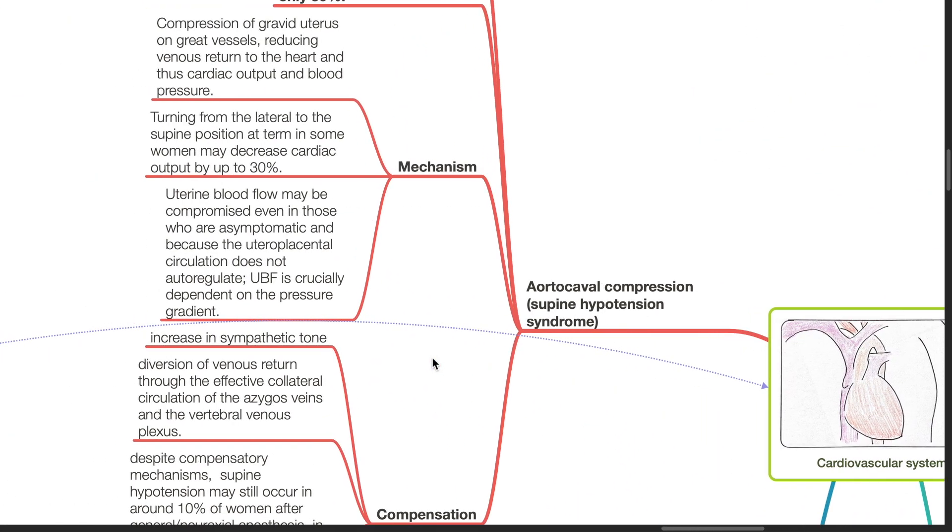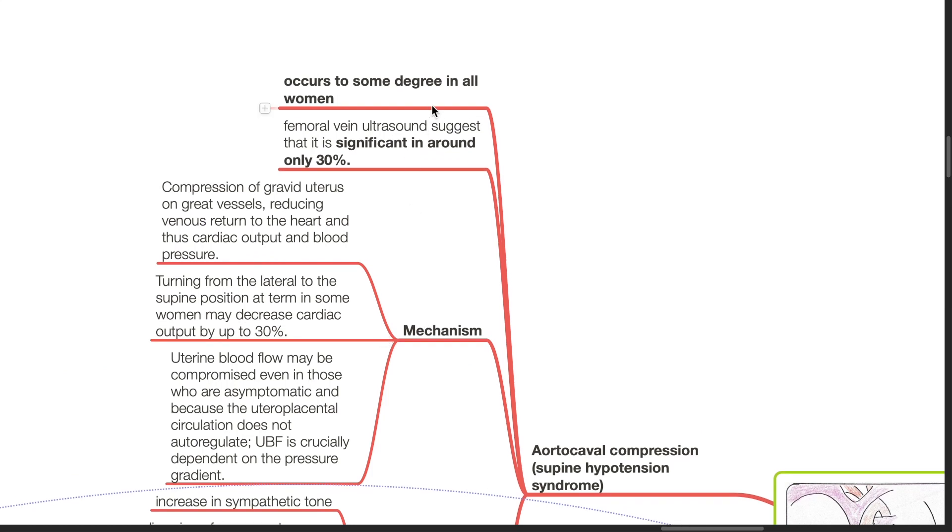Aortocaval compression occurs to some degree in all women. Femoral vein ultrasound suggests that it is significant in only 30%. Compression of the gravid uterus on great vessels reduces the venous return to the heart, and thus cardiac output and blood pressure reduces. Turning from the lateral to the supine position at term, in some women, may decrease cardiac output by up to 30%.